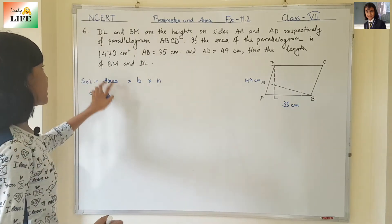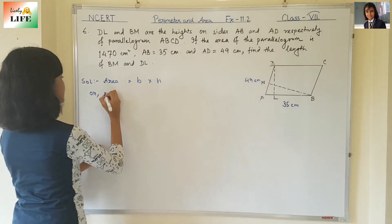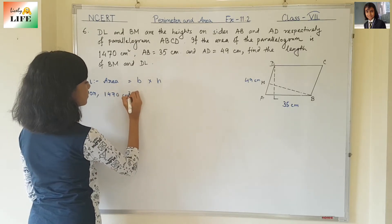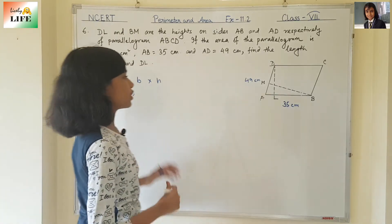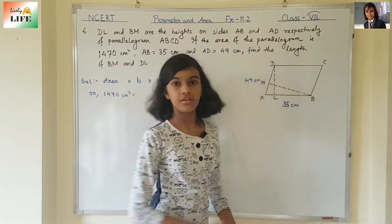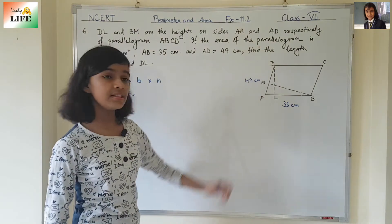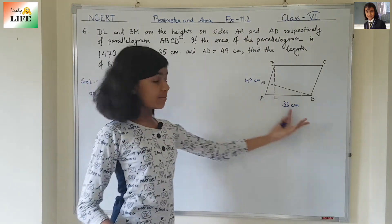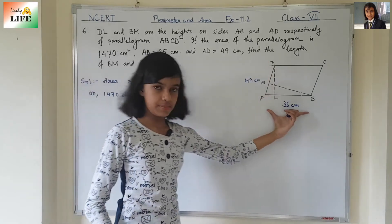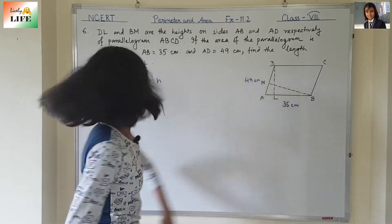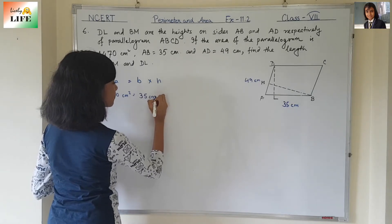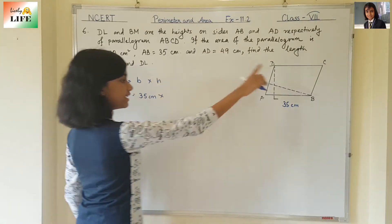Now, we know the area is 1470 cm squared. First, let's find the length of DL. On which side is the DL? It is on AB. If DL is the height, then AB is the base. AB is 35 cm, so base is 35 cm.